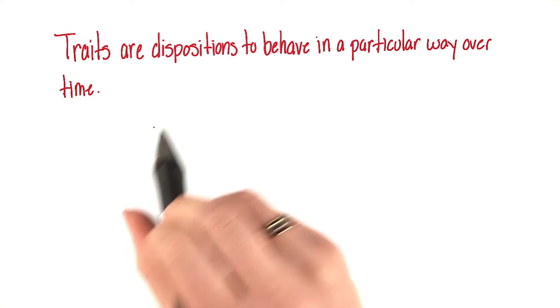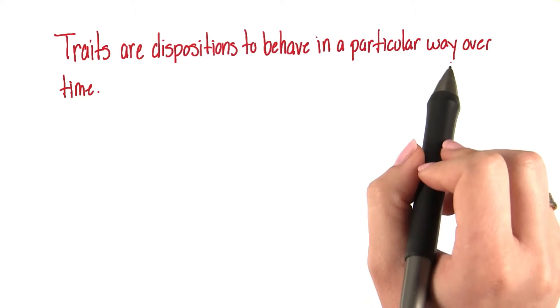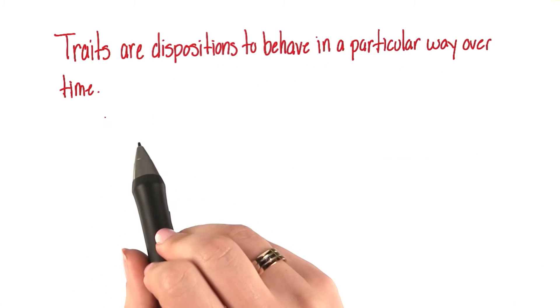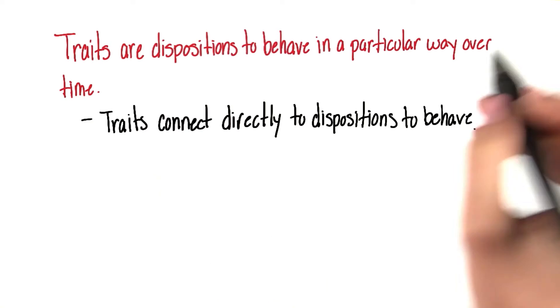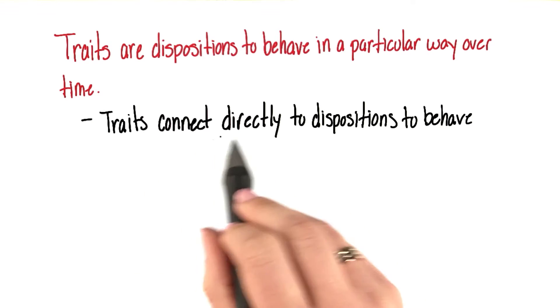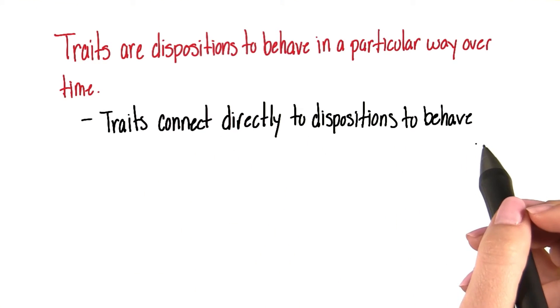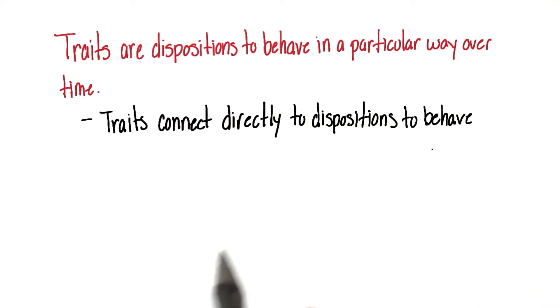Personality traits are dispositions to behave in a particular way over time. Traits are connected directly to the disposition to behave. Let's look at an example.